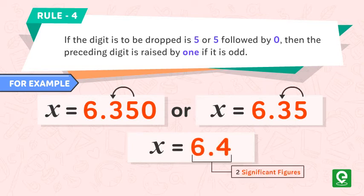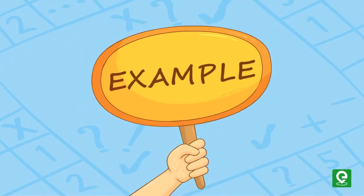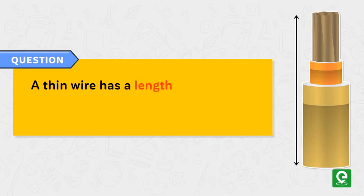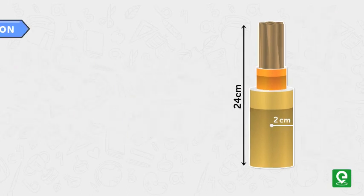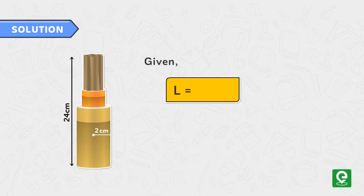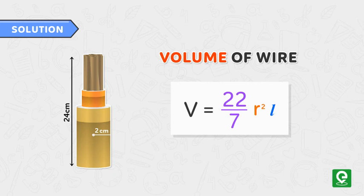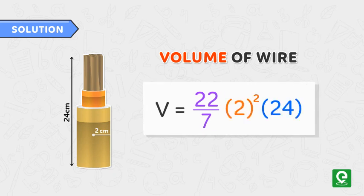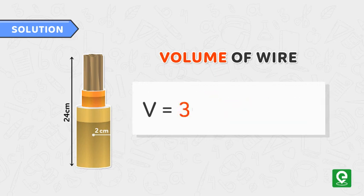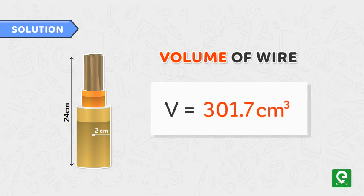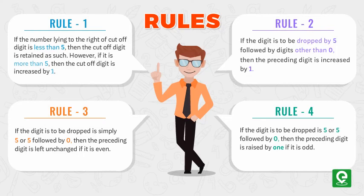Let's take an example to understand this concept better. A thin wire has a length of 24 cm and radius 2 cm. Calculate the volume of the wire. Solution: given length L = 24 cm and radius r = 2 cm. Volume of wire V = π r² L, or V = (22/7) × 2² × 24. On solving, we get volume = 301.7142857 cm³. Therefore, volume becomes 301.7 cm³ after rounding off to four significant figures.